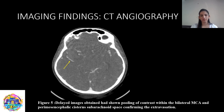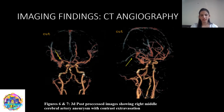For the delayed images taken three minutes after, we can still see pooling of the contrast in the subarachnoid space in the right temporal region, which was confirming our suspicion of contrast extravasation or re-rupture. These are 3D post-processed images in which we can see the aneurysm in the right MCA with contrast extravasation.